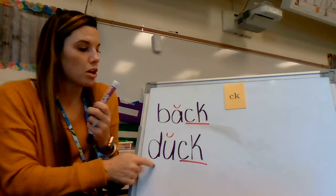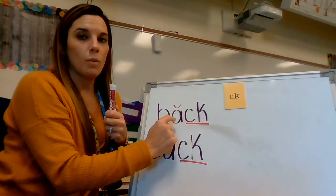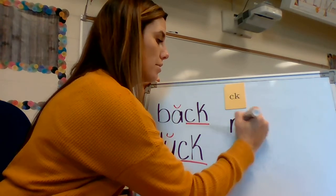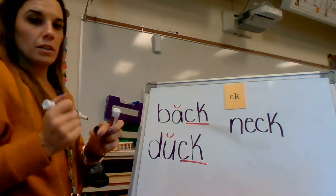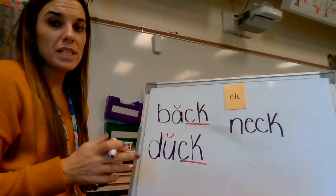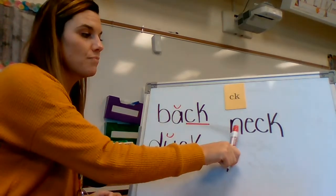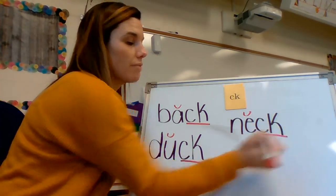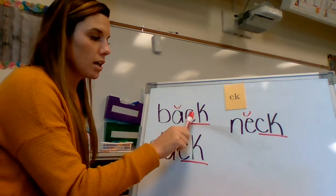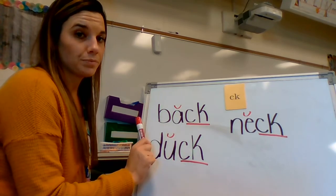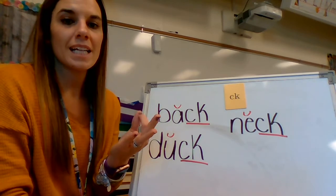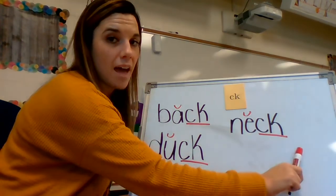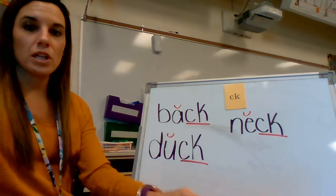Let's do another one so we can see again how the digraph CK always ends a word after the short vowel. Let's mark up our word. Do you see a short vowel? We have a consonant, then the vowel E — it's going to say /e/, it's a short vowel — and here's our digraph CK. Notice how in all of these words the digraph CK comes after a short vowel. Let's tap it out: N-E-CK — neck. Back, duck, and neck.